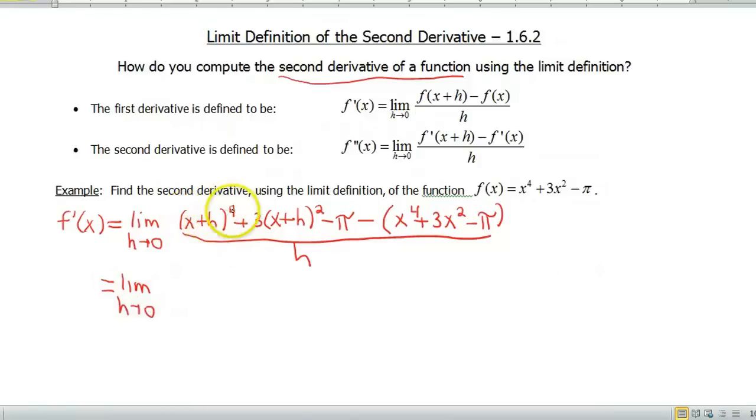I need to do x plus h to the fourth power. That means I'm gonna have to multiply out x plus h times itself four times. Well, if you watched our previous video, we did it as a cubic. So then you can go ahead and take that polynomial that we got and just multiply that by x plus h. Or you can just multiply it all out on your own. So anyway, when you do that, you end up with x to the fourth plus 4hx to the third,